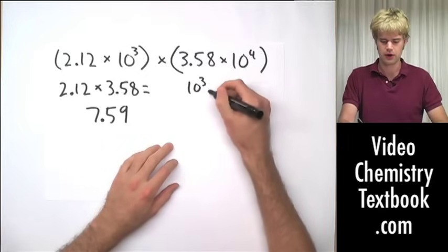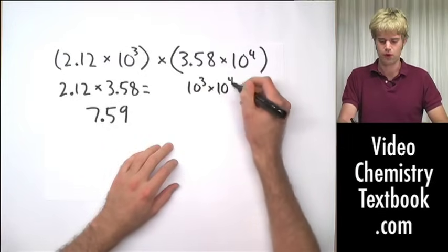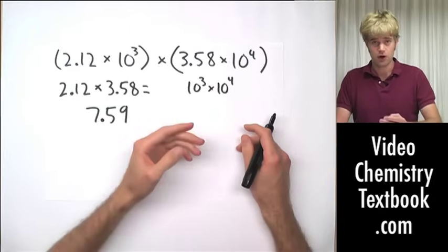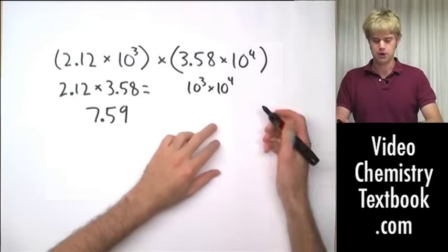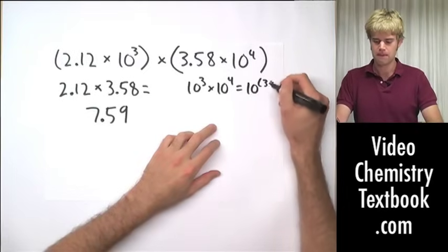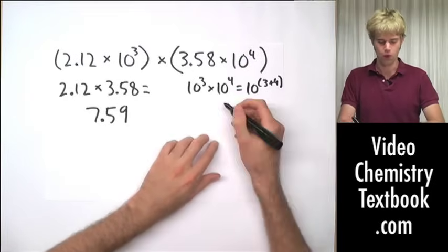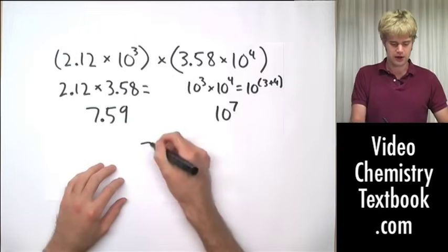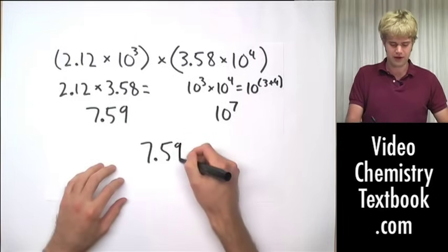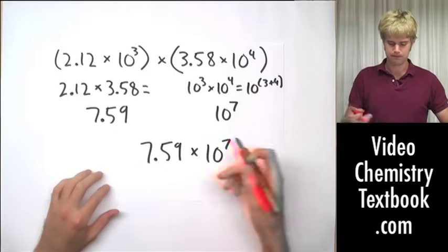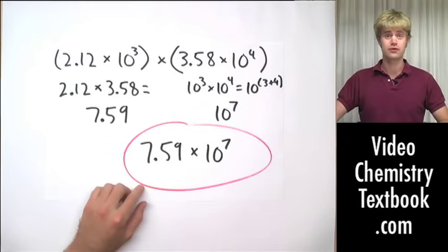So we do 10 to the third times 10 to the fourth. When we multiply powers of 10 together, we add the exponents. So this equals 10 to the 3 plus 4, or we can say equals 10 to the seventh. So the answer here is 7.59 from the first half times 10 to the seventh. And that's our answer for this problem.